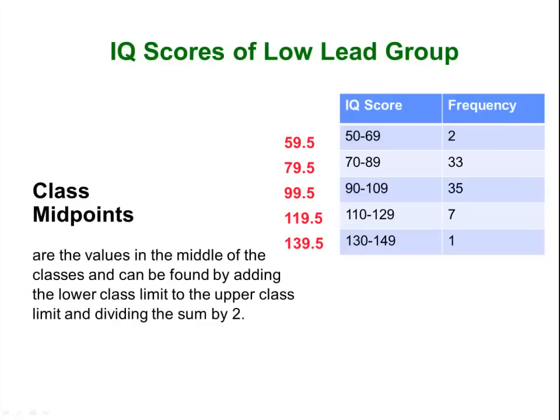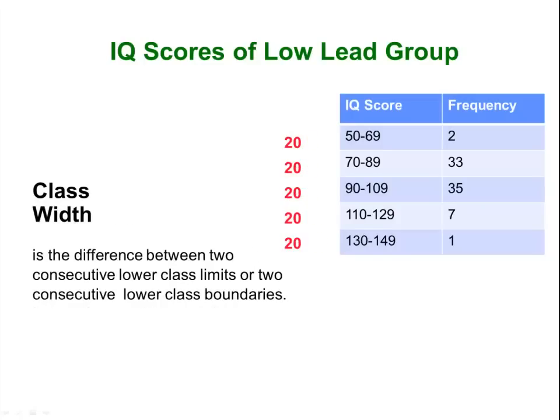Class midpoints, just like what it sounds, is the middle of each class. You take the upper class limit, subtract the lower class limit, and divide by 2 to get the midpoint formula. The class width is just how wide each class is. From 50 to 69 that is a distance of 20. If you do 69 minus 50 you get 19, but that is because you are not counting the endpoints. So to figure out the class width numerically, it is always the top number minus the bottom number, then add 1. For example, the numbers from 1 to 10 would have a width of 10, but 10 minus 1 is 9, so you add one more to get the actual width.